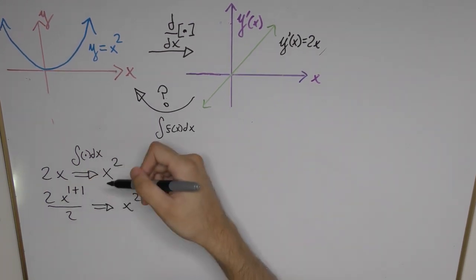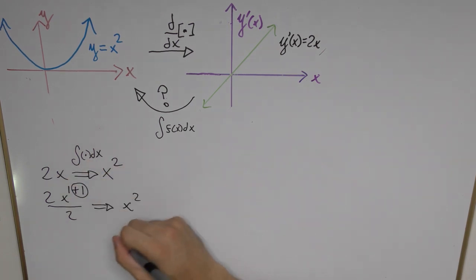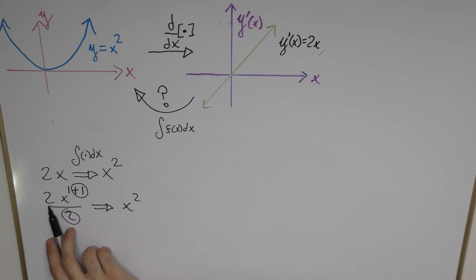So there are two things we perform in this case: we added 1 to the power and we divided the function by whatever factor was already at the front.